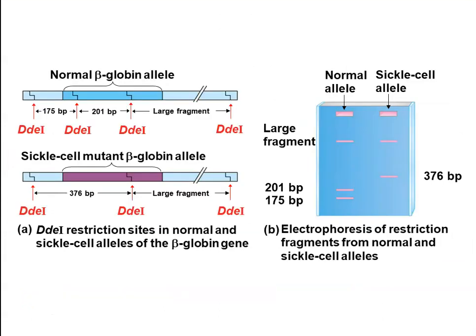We see RFLPs with sickle cell disease: adding the restriction enzyme DdeI to DNA containing either the normal beta-globin allele or the mutant allele produces different-size fragments, because the single base-pair change means DdeI cannot cut the DNA at the same locations. When that DNA is run out through a gel, we see different-size fragments for normal versus sickle cell forms.